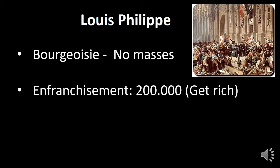Although enfranchisement conditions were enlarged, only 200,000 people were allowed to vote in France. When the leaders of the masses went to talk to the king, the king didn't talk to them and sent an official — Guizot. When the leaders talked to Guizot for the liberalization of the franchise, he said: 'Get rich. If you get rich, you will be able to vote.' So the government of Louis-Philippe also favored the aristocracy and the bourgeoisie, not the masses.